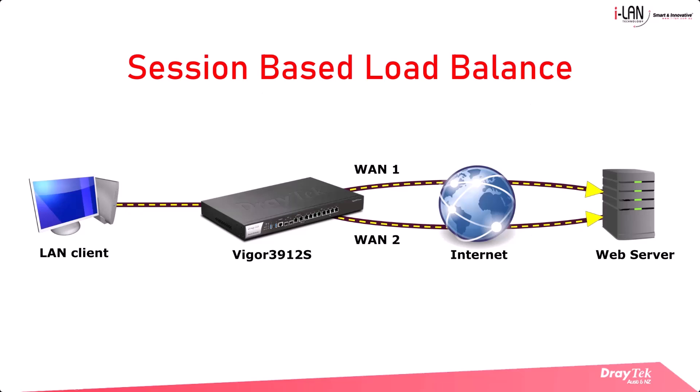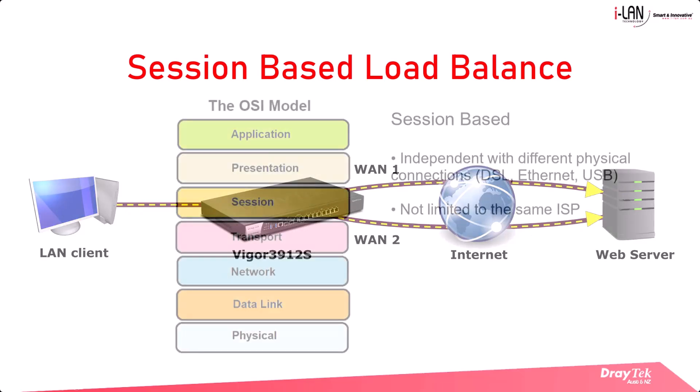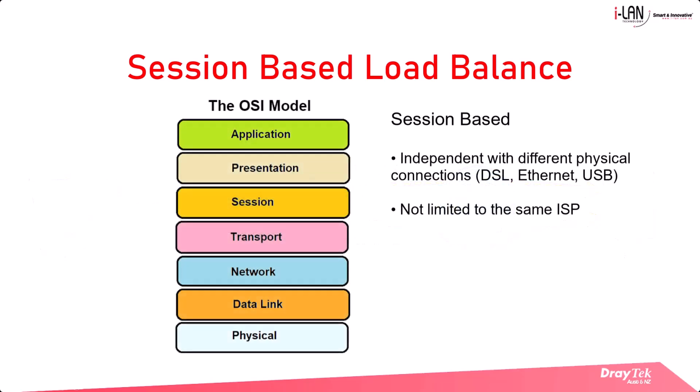In session-based load balancing, two or more WANs can be combined into one fat pipe. Session-based load balancing utilises the session layer of the OSI model, so it can use any type of internet connection since it's independent of the physical connection.